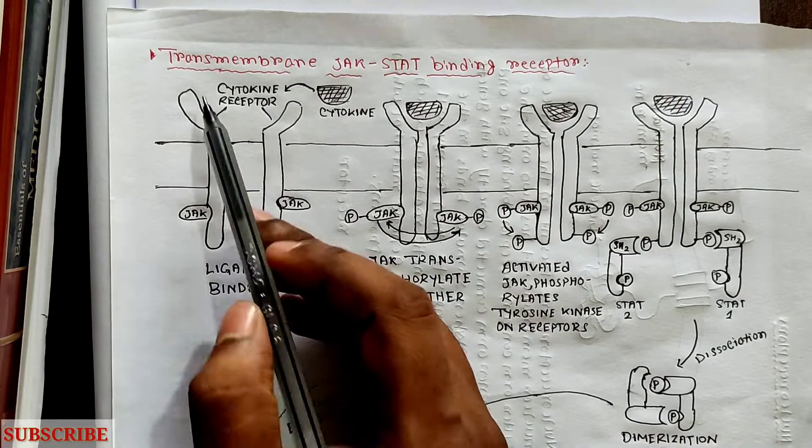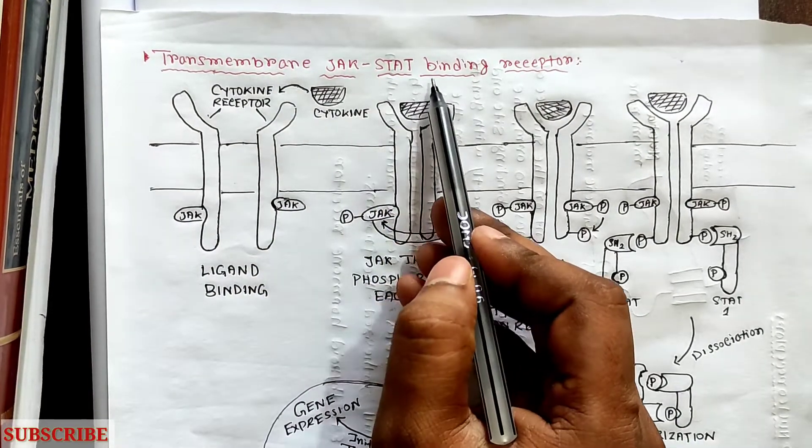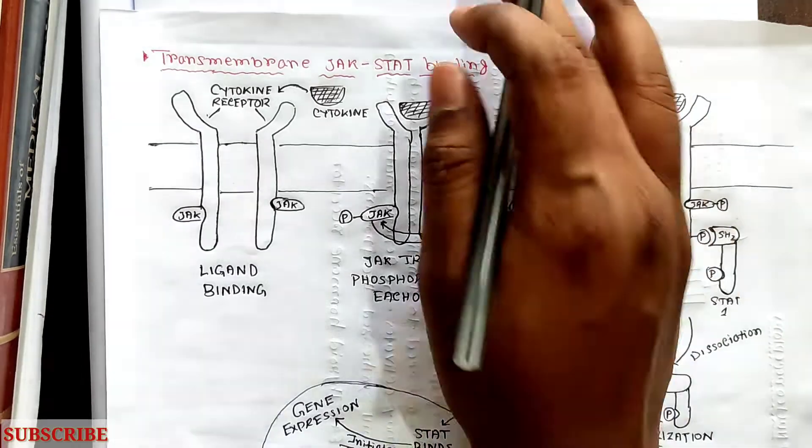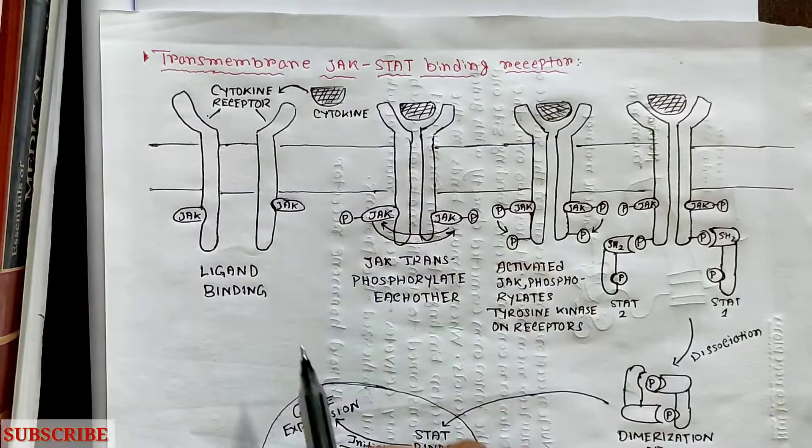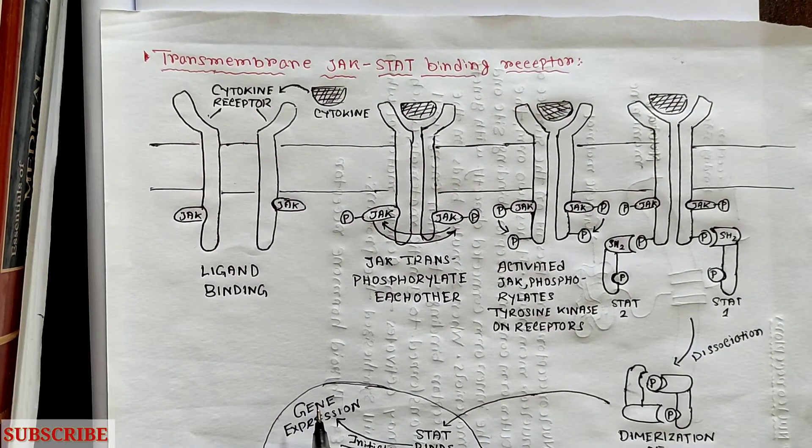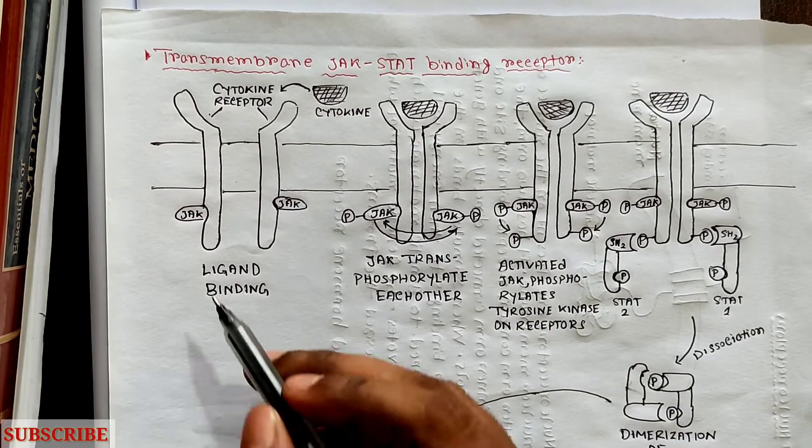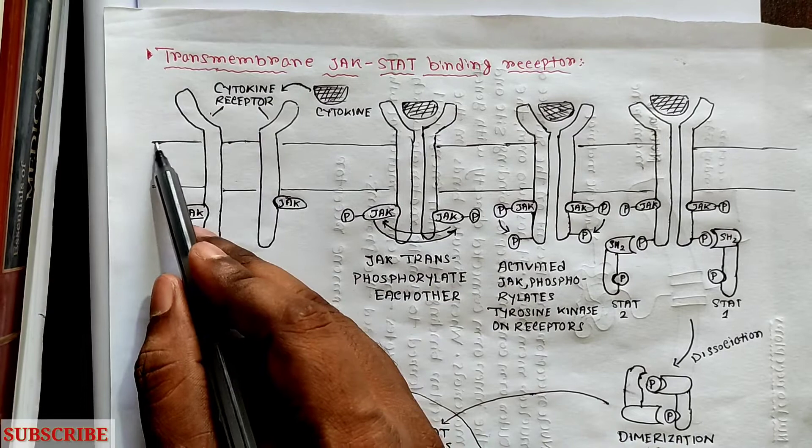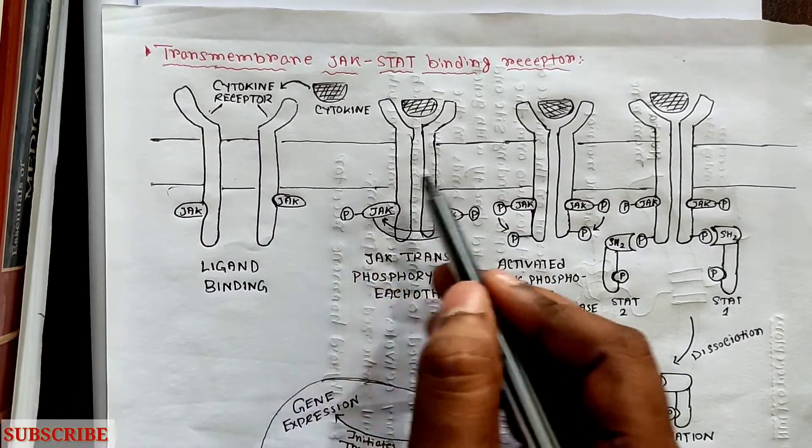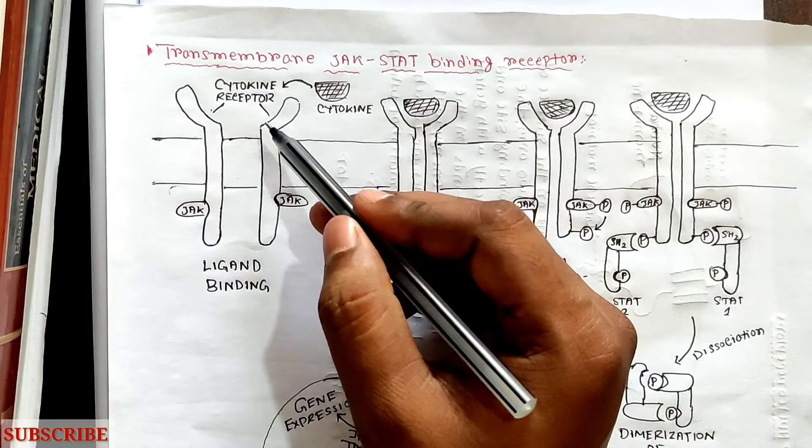Hello everyone, our today's topic is transmembrane JAK-STAT binding receptor. If you are new to this video, you can watch the previous part on receptors. This is a cell membrane, consider this is a cell membrane.